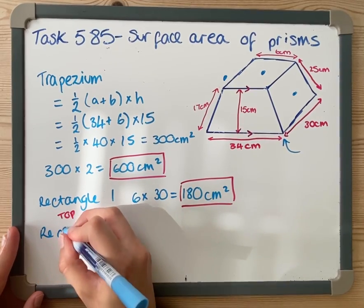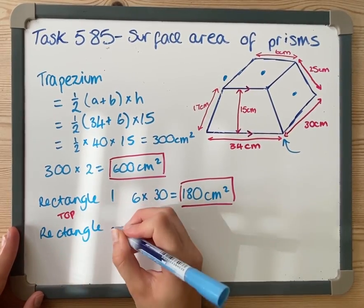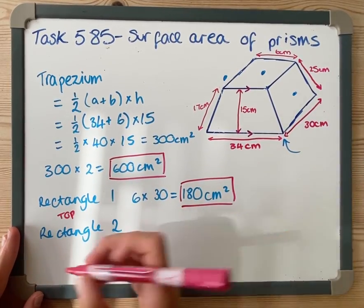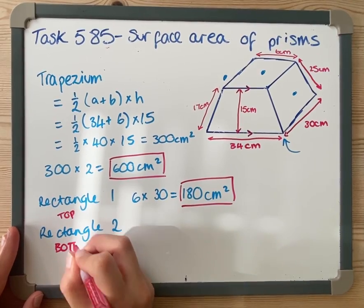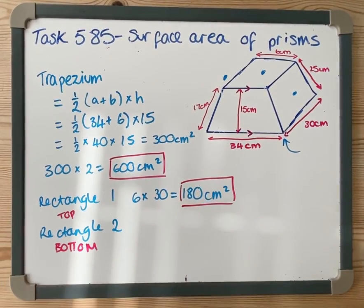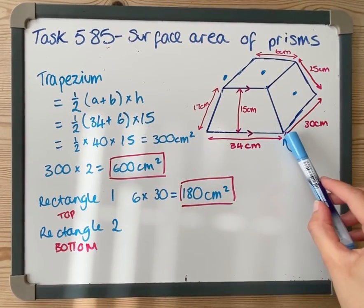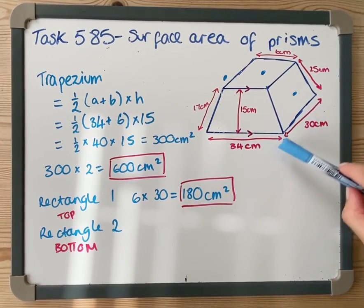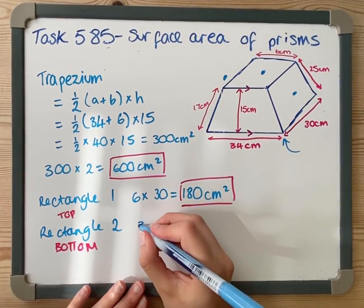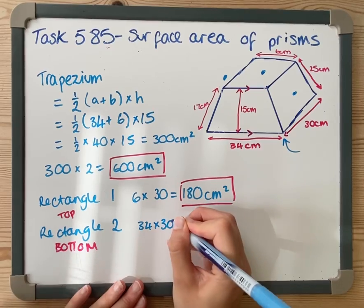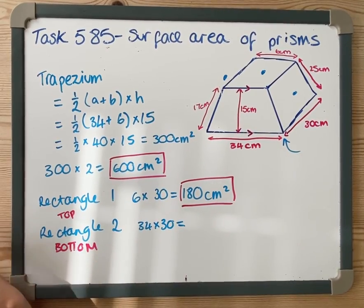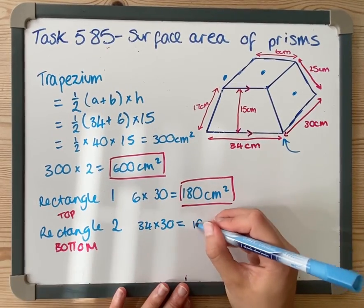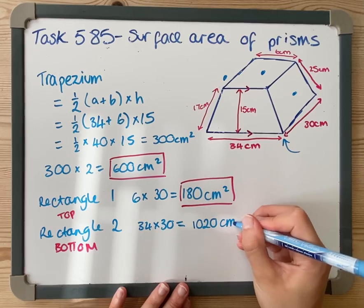I'm going to do rectangle two now, which is going to be the one on the bottom. I can really clearly see that it's got a width of 34 and it's got a length of 30. So I've got to do 34 times 30. You could do all this without a calculator, but I'm just very quickly going to shove it in there, which is 1,020 centimeters squared.